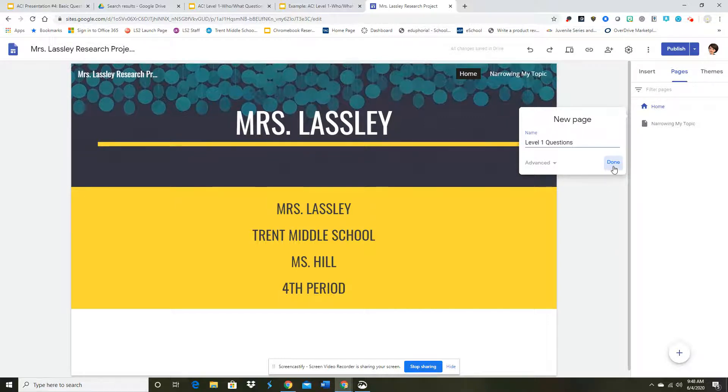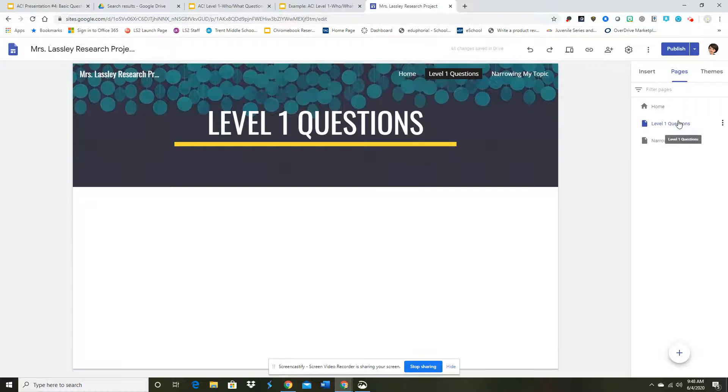You'll notice that once I hit done, it's going to come up and I'm actually going to pull it under because the way it worked, it went above my narrowing topics. But I want these to be in order: home, narrowing topics, level one questions. Now I'm not going to place all of my level one questions here. I'm going to create a sub page.